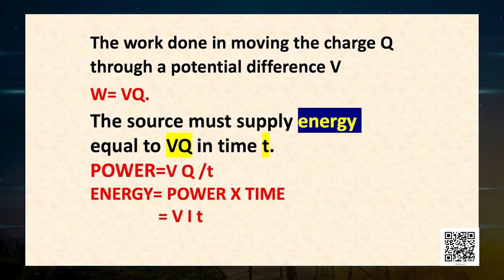Now, the power input into the circuit by the source is denoted by the letter P and is given by the formula: work done divided by time. In other words, it is the energy supplied to the circuit by the source in time T, and is given by the formula power into time T, which is V I T.